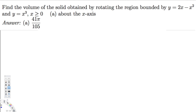Hey, what's going on guys? Let's do this problem right here. The question is asking: find the volume of the solid obtained by rotating the region bounded by y = 2x − x² and y = x³, and they have mentioned that x should be greater than 0.